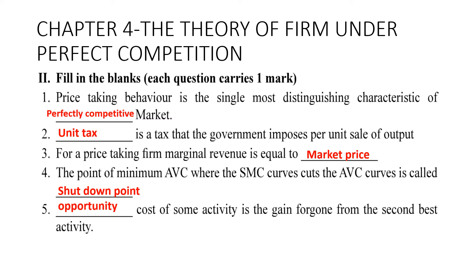Chapter four: theory of the firm under perfect competition. First: price-taking behavior is the single most distinguishing characteristic of a perfectly competitive market. Second: a unit tax is a tax that the government imposes per unit sale of output.